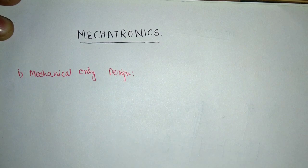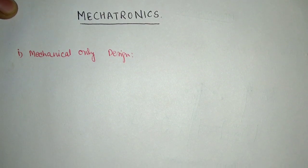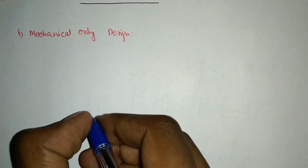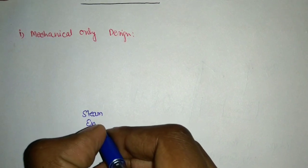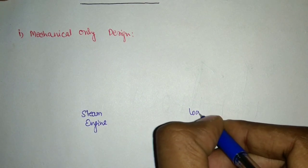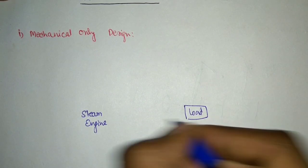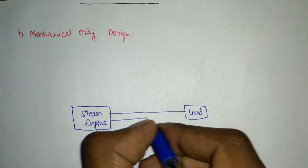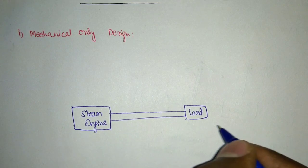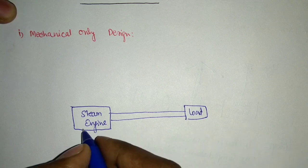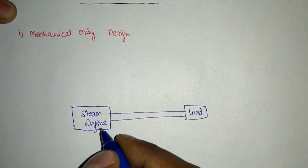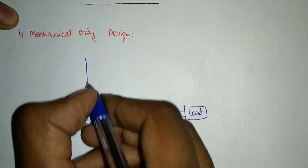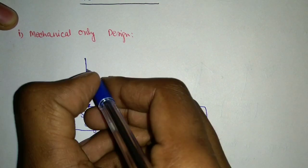To explain this concept better, let's take an example of a steam engine — you can relate that example with the fuel supply in a carburetor also. For example, I have a steam engine which is driving my load, and these two things are connected with the help of a shaft. Whenever the load value is increasing or decreasing, accordingly the steam supply to the engine shall increase or decrease.